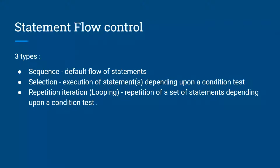Now let's look at the types of flow of control. Python offers three types: sequence, selection, and repetition. Sequence is the default flow where each line is executed in order, one by one. Selection involves execution of statements depending on a condition test — if the condition evaluates to true one course of action is followed, otherwise a different one is followed if it's false. The third type, iteration or looping, repeats a set of statements until a condition evaluates to false, and will be covered in the next video.